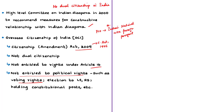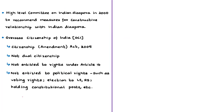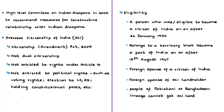OCI cardholders cannot hold constitutional posts such as President, Vice President, or Judges of the Supreme Court or High Courts. These are certain rights and privileges enjoyed by citizens of India but not by overseas citizens of India. Now let us discuss the eligibility to register as an OCI cardholder — the foreign nationals of the following categories are eligible to register.